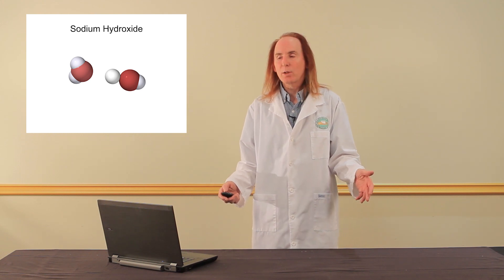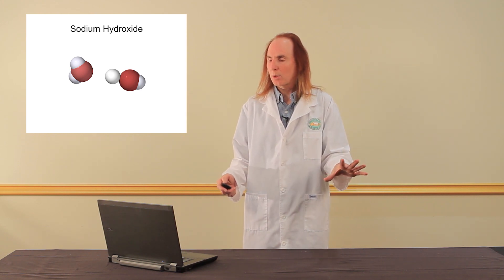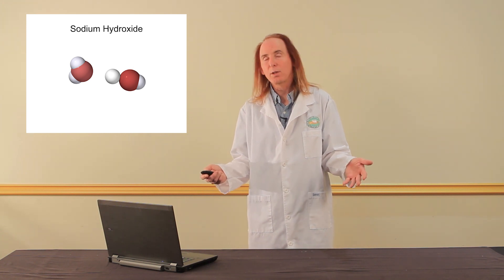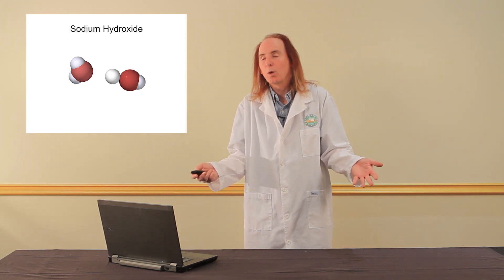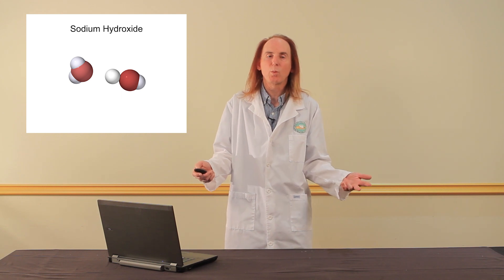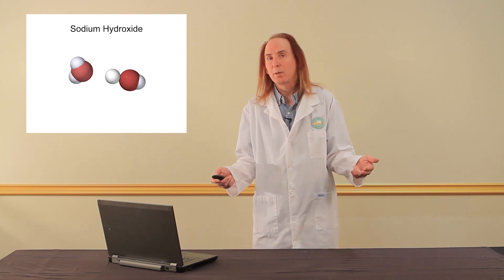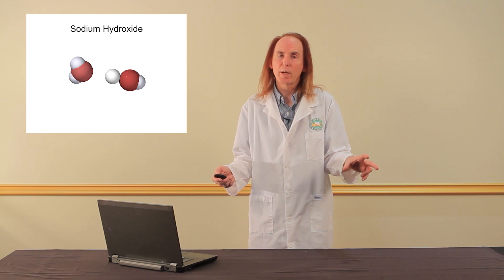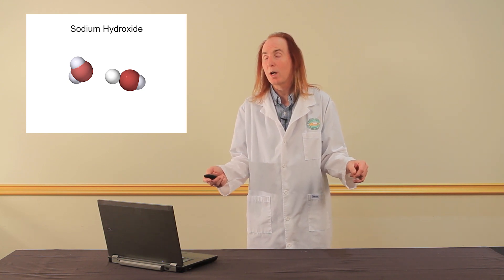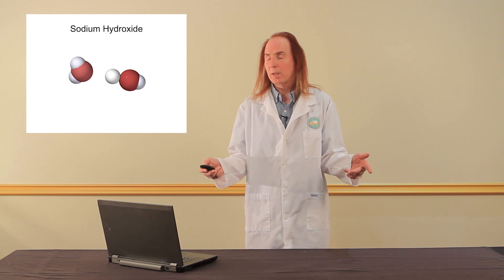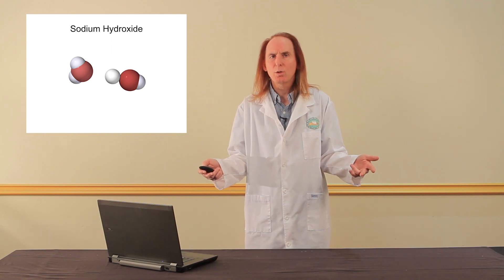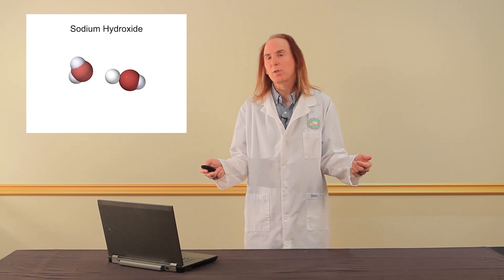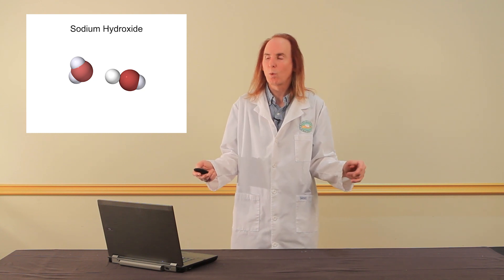This is what sodium hydroxide looks like. There's a water molecule on the left and a sodium hydroxide molecule on the right. And you'll notice they look very similar, almost identical. They consist of two white atoms and a red atom. For water molecule, the two white atoms are hydrogen, the red atom is oxygen. For sodium hydroxide, the white atom that's kind of detached from the other two is a sodium ion, and the OH is represented by one red oxygen and one white hydrogen.